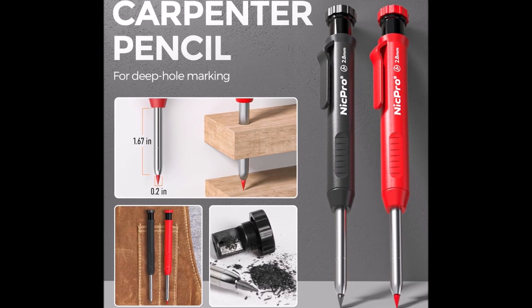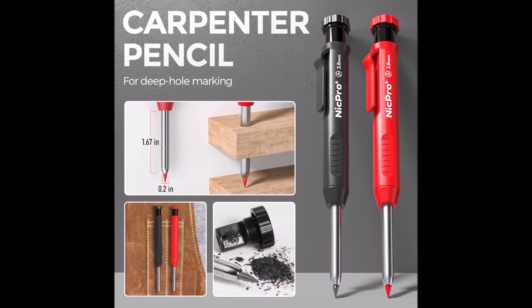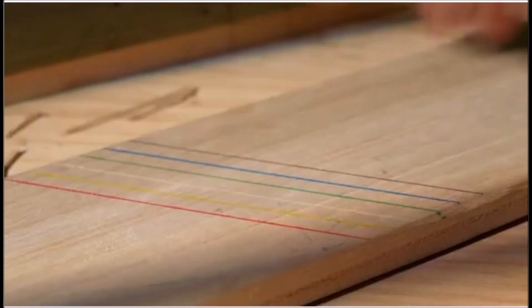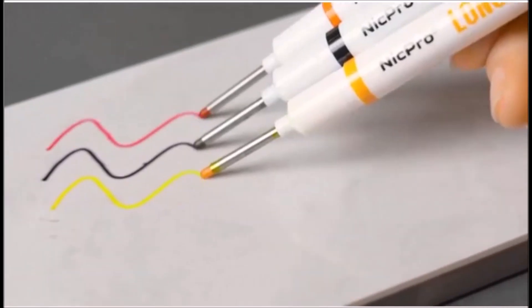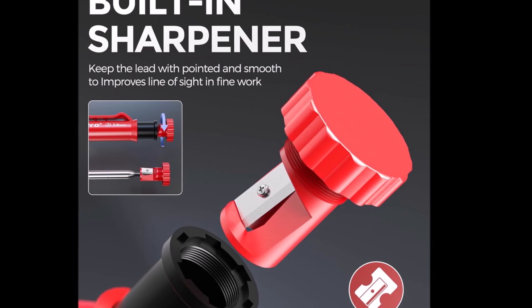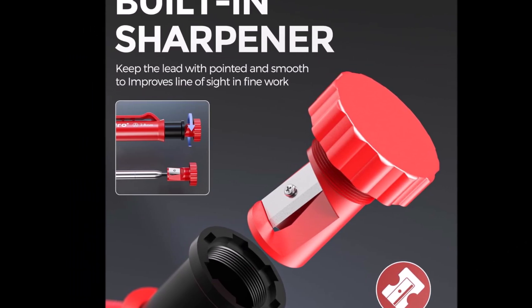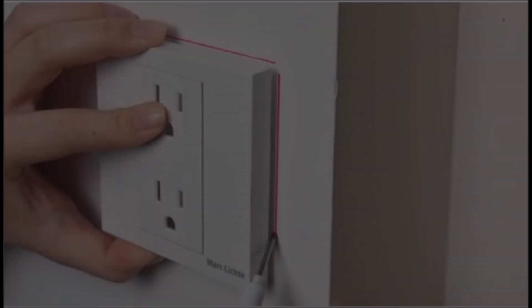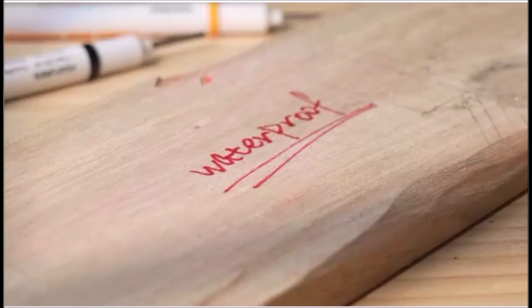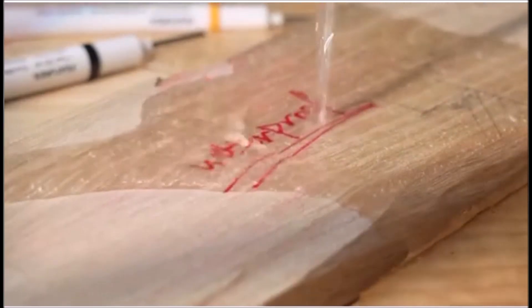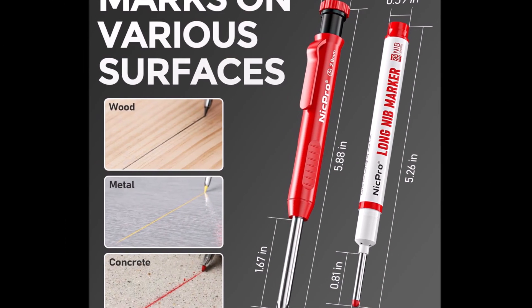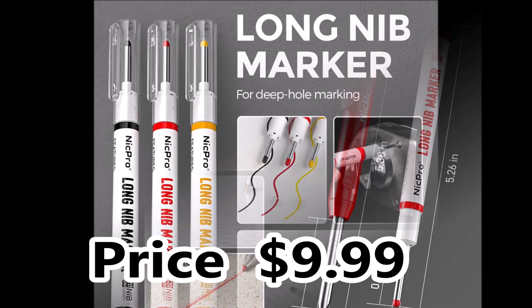The included deep hole marker pens use waterproof, smudge-proof ink and come in three colors for better visibility across different materials. Ergonomic grips and pocket clips add comfort and convenience, especially during long workdays. The built-in sharpener, screwed into the pencil top, ensures the lead stays sharp and ready without getting lost. With 26 refills, a 4B eraser, and a storage box, this set offers everything needed for accurate layout work. Whether for construction, woodworking, or electrical installs, it's a reliable marking solution that keeps pace with demanding tasks.